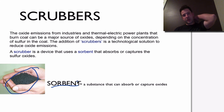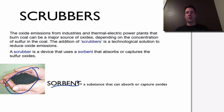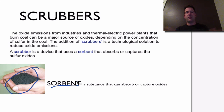What a scrubber does is it takes the oxide emissions from industries or thermoelectric power plants — anything that burns coal. This can create a vast volume of these oxides. Remember, the oxides are what form in combination with water.